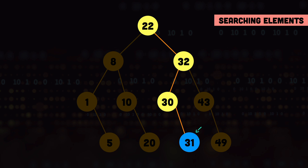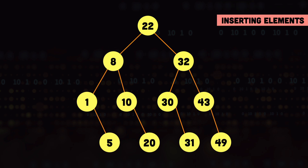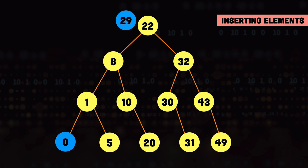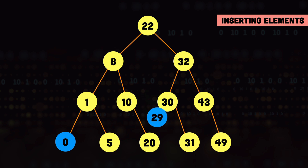Before talking about complexity, let's look at insertion. To insert the value 0, we start at the root: 0 is less than 22 so we go left; 0 is less than 8 so we go left again; 0 is less than 1 and since there is no left child of node 1, we insert 0 there. As another example, to insert 29: 29 is greater than 22 so we go right; smaller than 32 so we go left; smaller than 30 and since node 30 has no children, we insert 29 to the left of node 30. That is how nodes are inserted into a binary search tree.